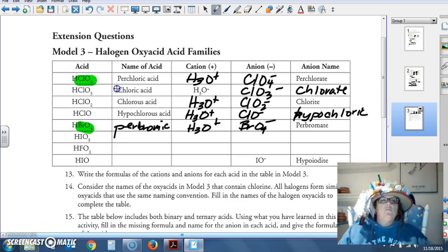IO3 is going to correspond to chlorate. This is iodate, we did learn this guy. So we'll have one hydronium ion.